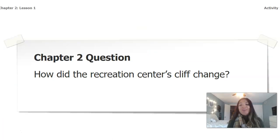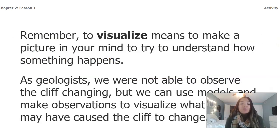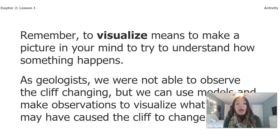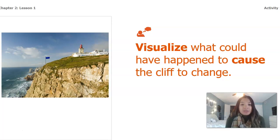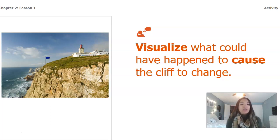Our chapter two question that we'll focus on throughout all the lessons is: how did the recreation center's cliff change? Remember, to visualize means to make a picture in your mind to understand how something happens. As geologists, we were not able to observe the cliff changing, but we can use models and make observations to visualize what may have caused the cliff to change. Looking at this picture, take a minute to visualize what could have caused the cliff to change.